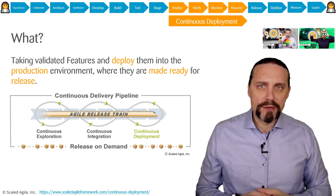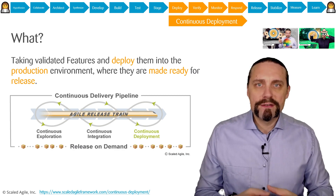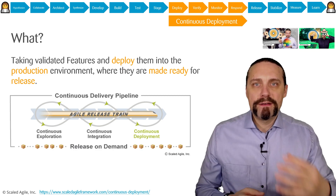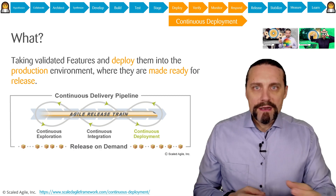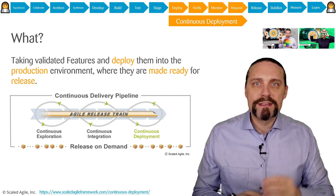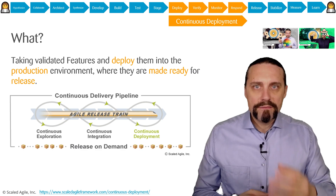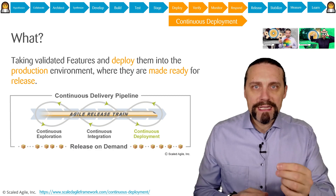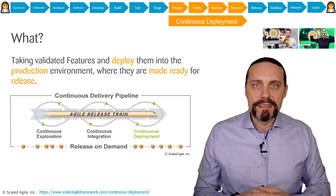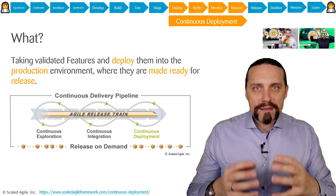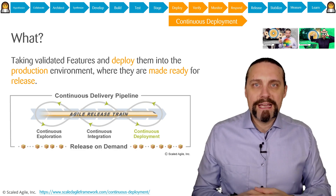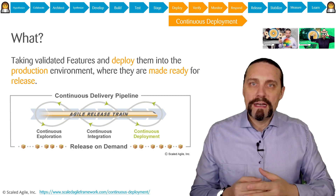Before continuous deployment we have continuous exploration and continuous integration — I have created videos for both. In continuous exploration we have the customer and the business with their bright ideas. Out of these ideas we extract the hypothesis and put it into an epic. We go back to the customer to find the real need, analyze market needs, define the minimal architecture to prove the hypothesis, then break the epic into features, create a backlog, and build a roadmap.